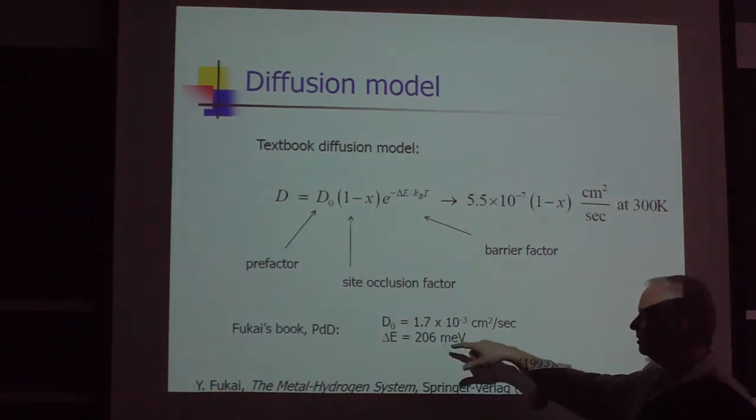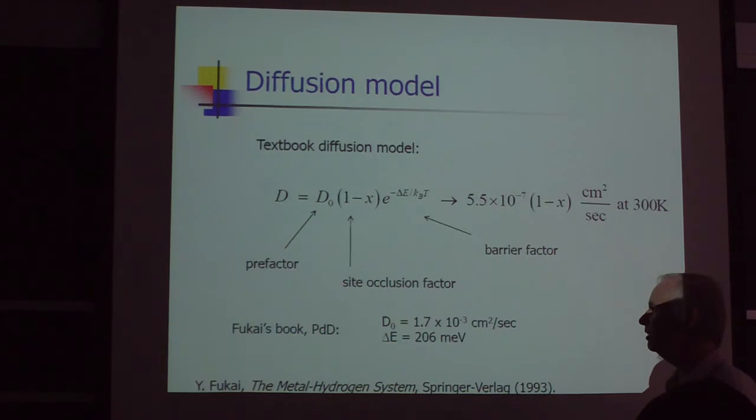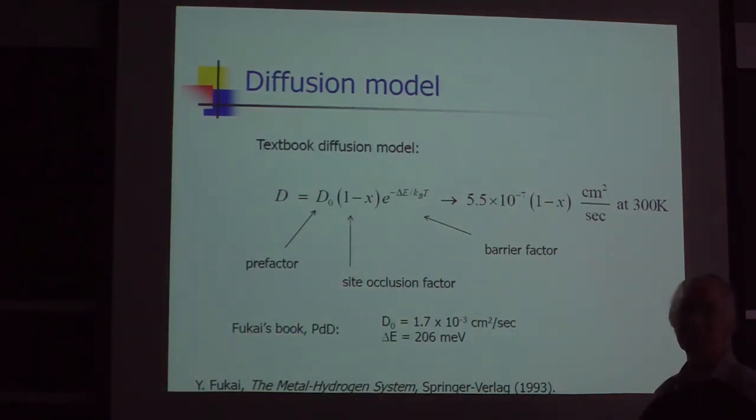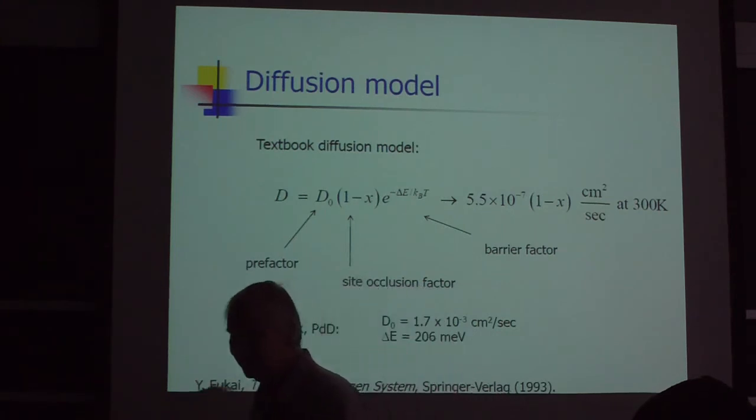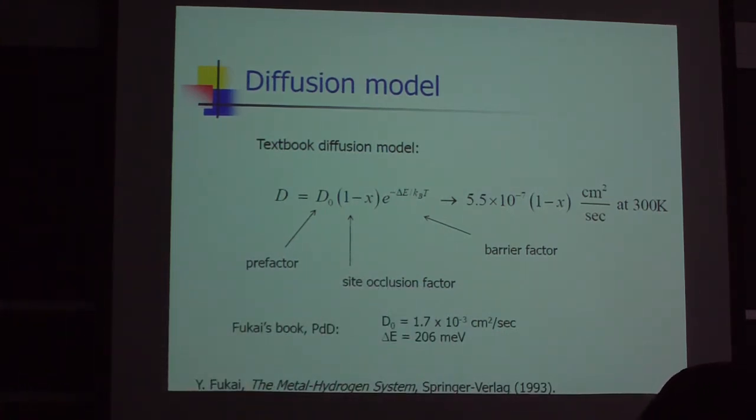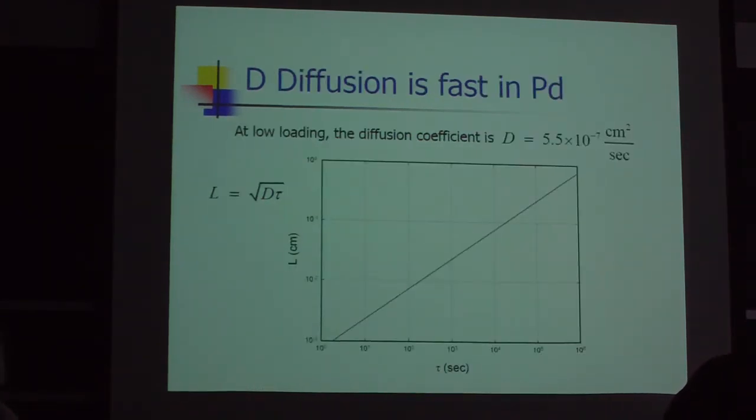The number of 206 millielectron volts for the barrier energy can be interpreted in terms of microscopic physics as having some idea of the energy difference between the octahedral site and the tetrahedral site. At least there are papers with such an interpretation.